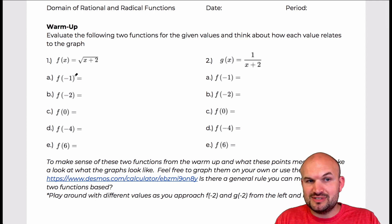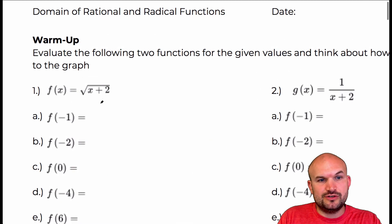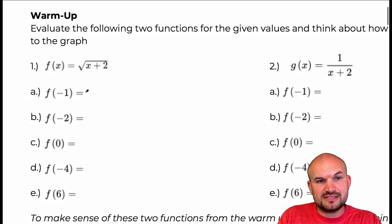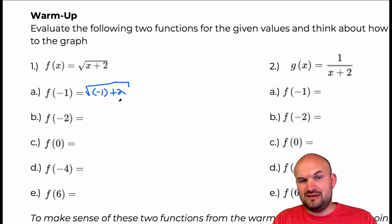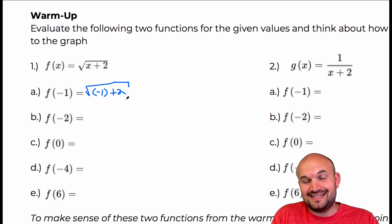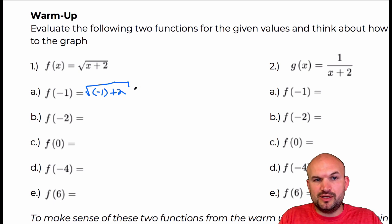If I change my input to negative one, I'm basically going to replace my x with a negative one. When I do that and evaluate, negative one plus two is going to be one, so I have the square root of one, which is equal to one.